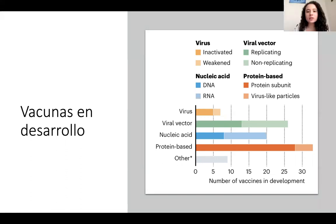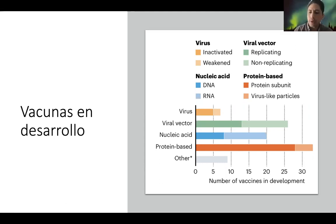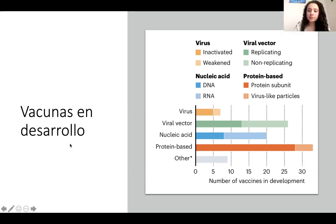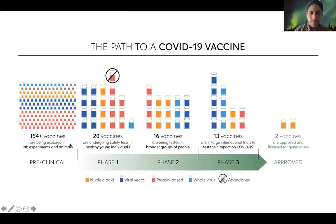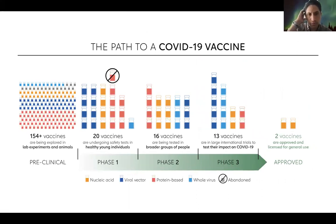La primera pregunta es: ¿cuáles son las vacunas que se están aplicando actualmente y cómo están conformadas? Básicamente son las vacunas que podemos observar en la diapositiva. Esto es lo que ha ocurrido en el desarrollo de las vacunas. Se empezaron con 154 potenciales vacunas. Aquí la tecnología está identificada por colores: las de ácido nucleico son naranjitas, las de vector viral son azules oscuras, las basadas en proteínas son rojas y las de virus entero son azules claras.